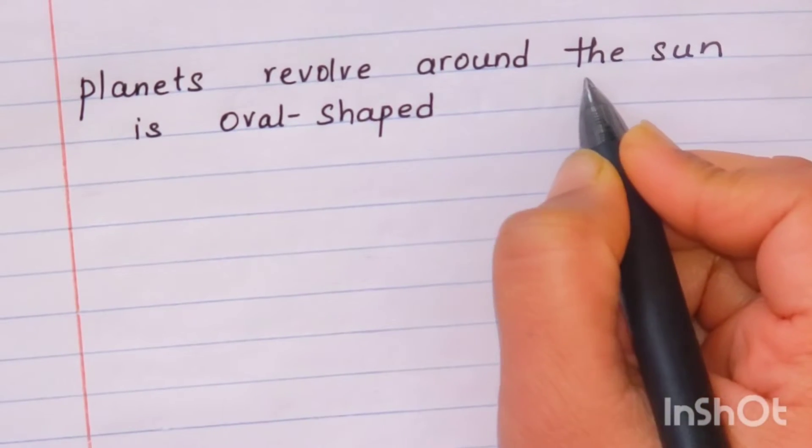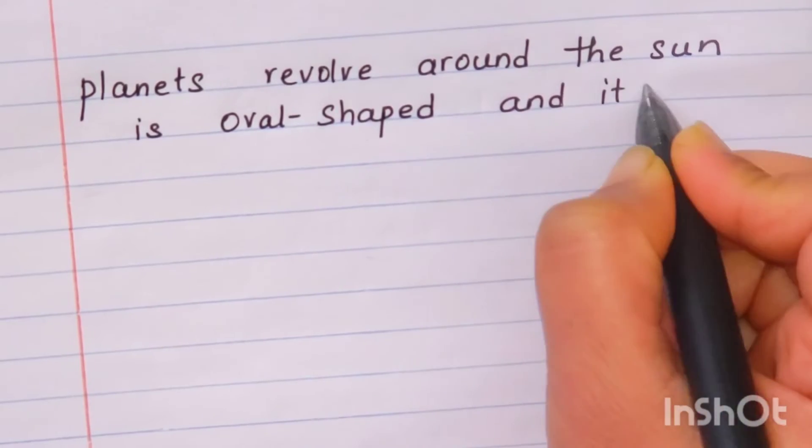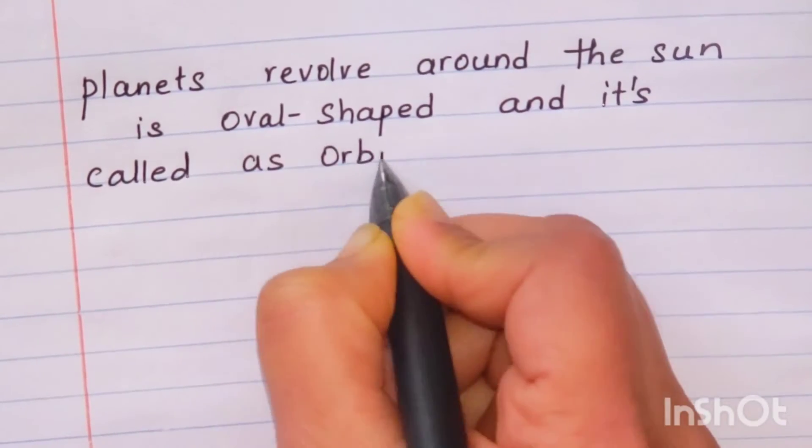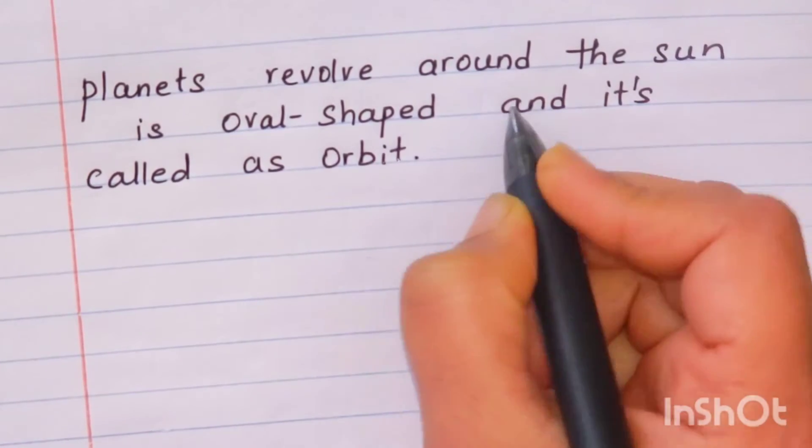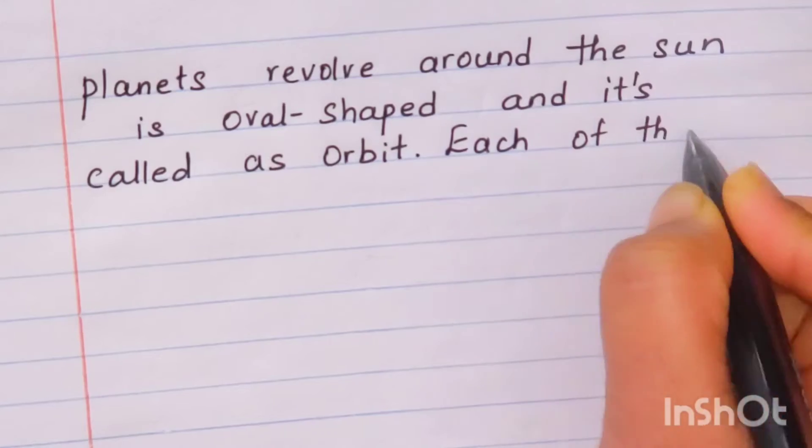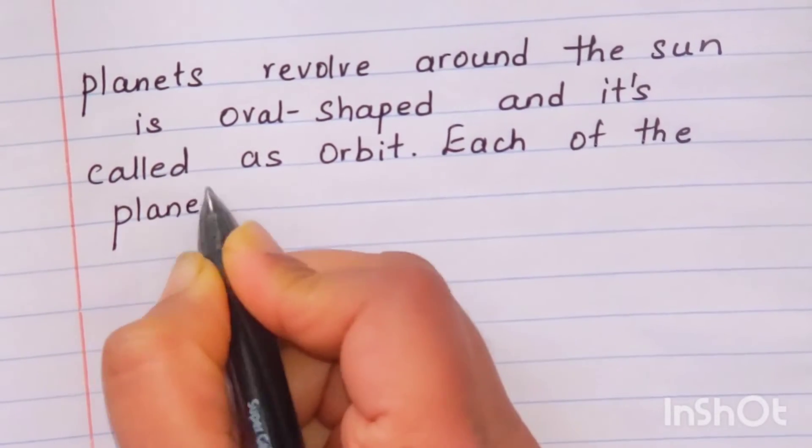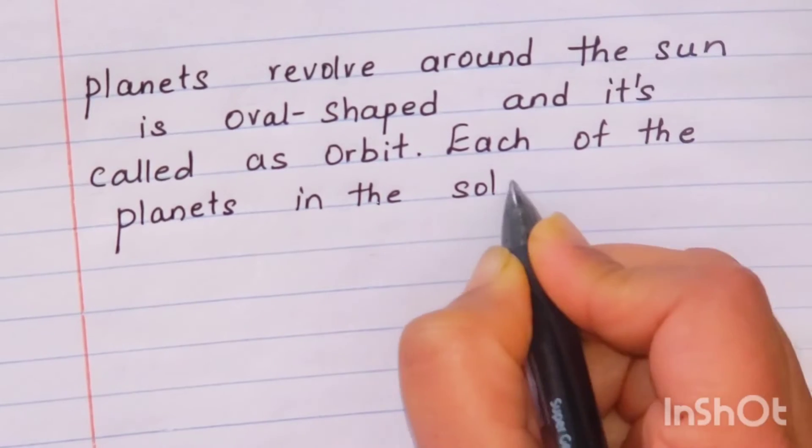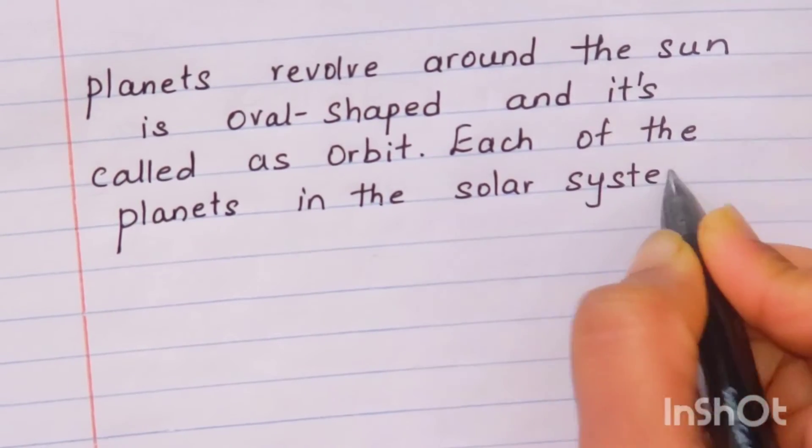The path that planets revolve around the sun is oval shaped and it's called as orbit. The direction or the way on which earth and other planets revolve around the sun is known as orbit.